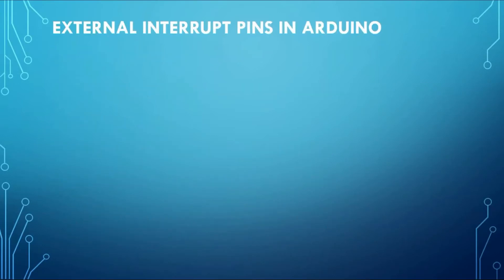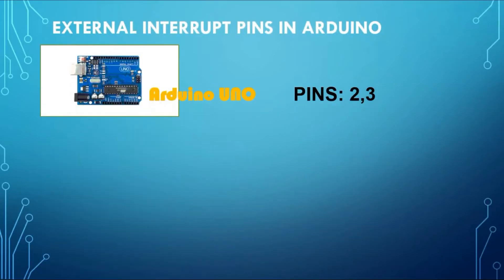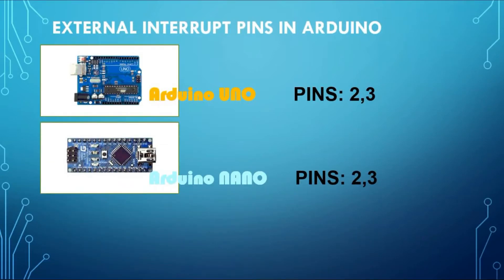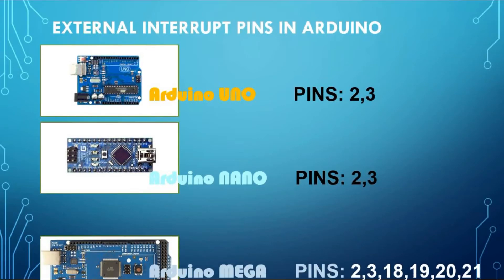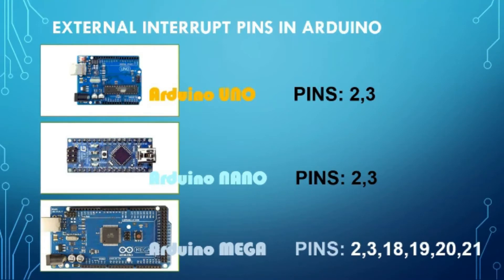Not all pins can be used for external interrupts. In Arduino Uno you can use pins 2 and 3. In Arduino Nano you can use pins 2 and 3 as well. Arduino Mega has many more pins — you can use pins 2, 3, 18, 19, 20, and 21. If you have any other Arduino board you would have to check the datasheet to see which pins can be used for interrupts.